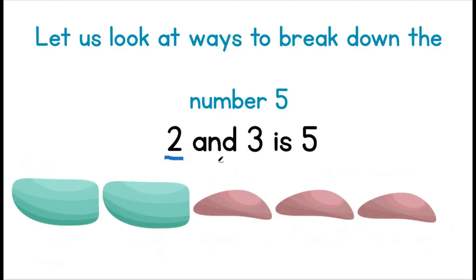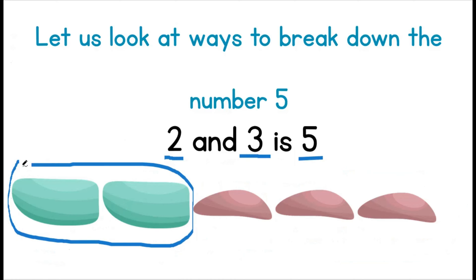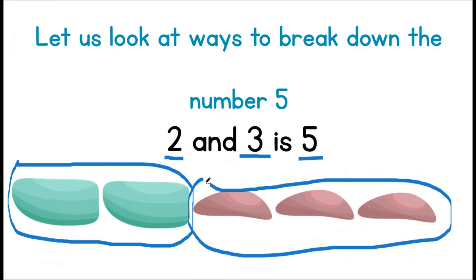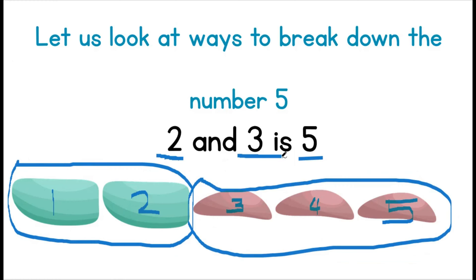Two and three is five. We have two green rocks and three purple rocks. Let us count how many they make together: one, two, three, four, and five. This means that two and three makes five.